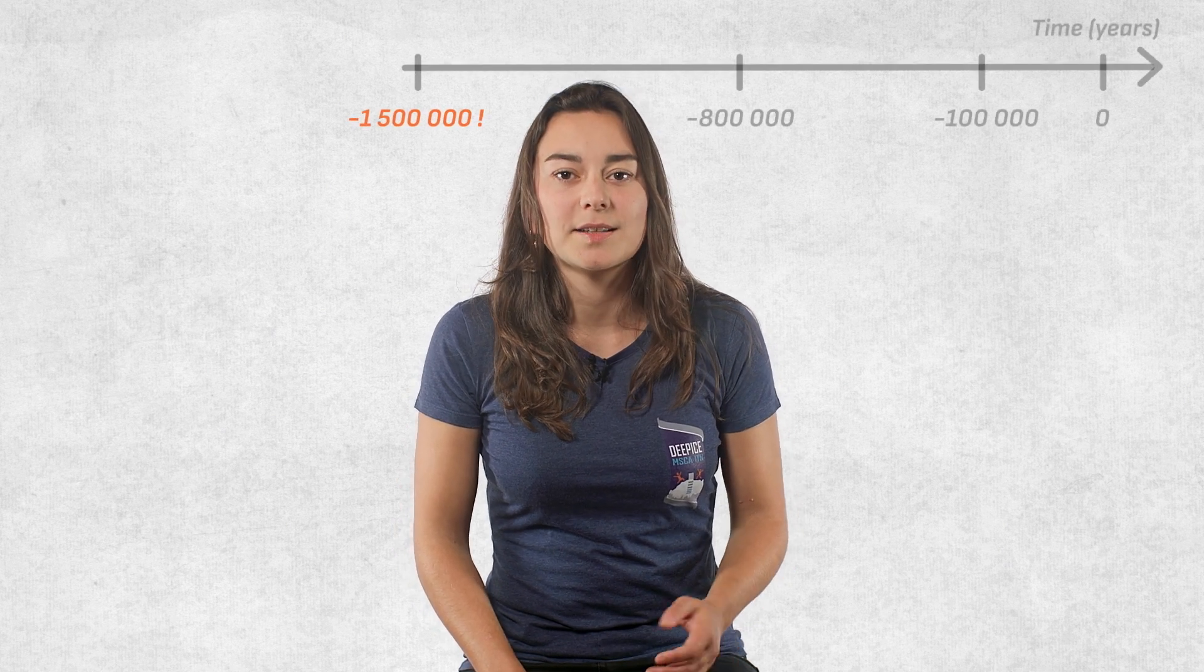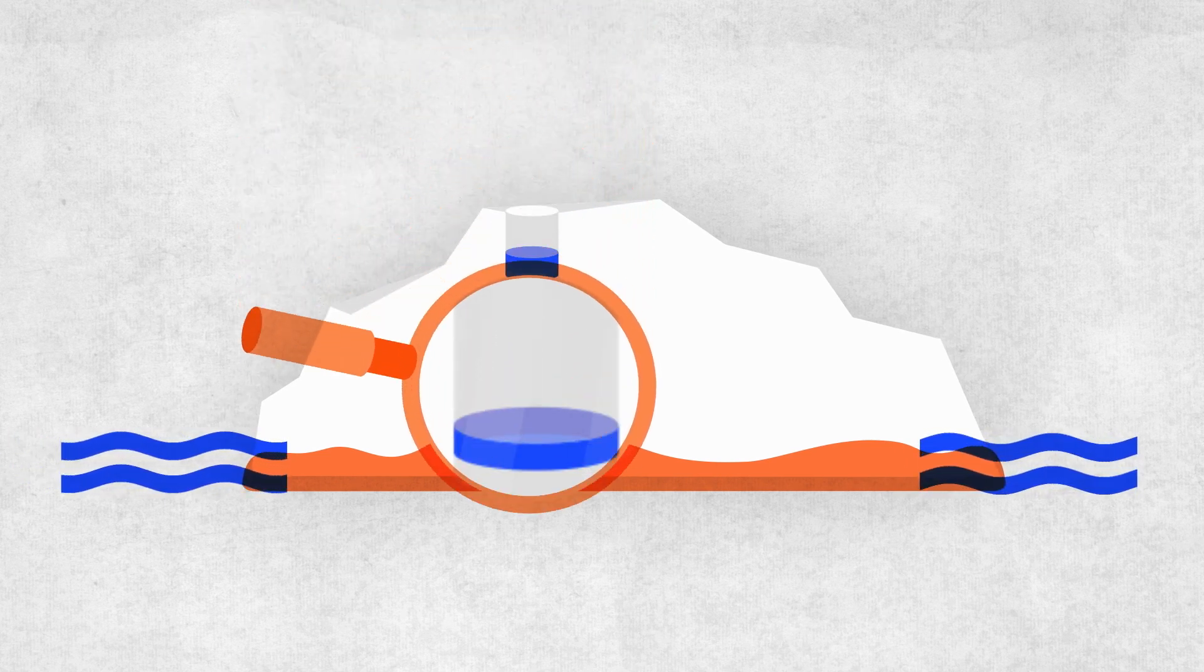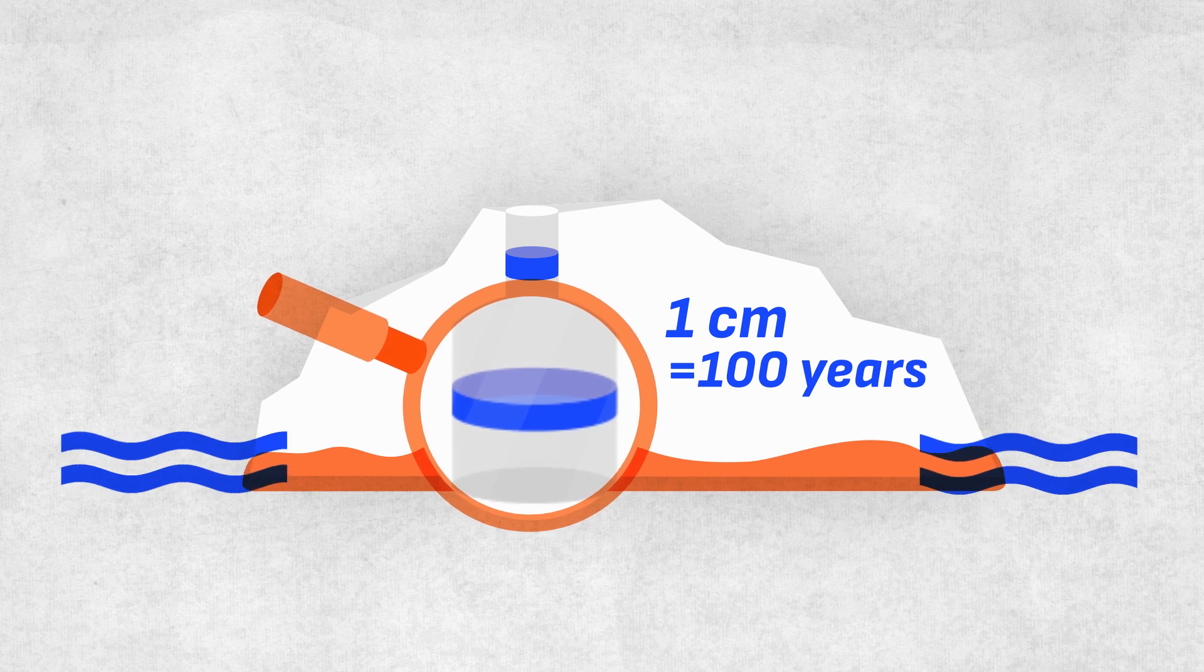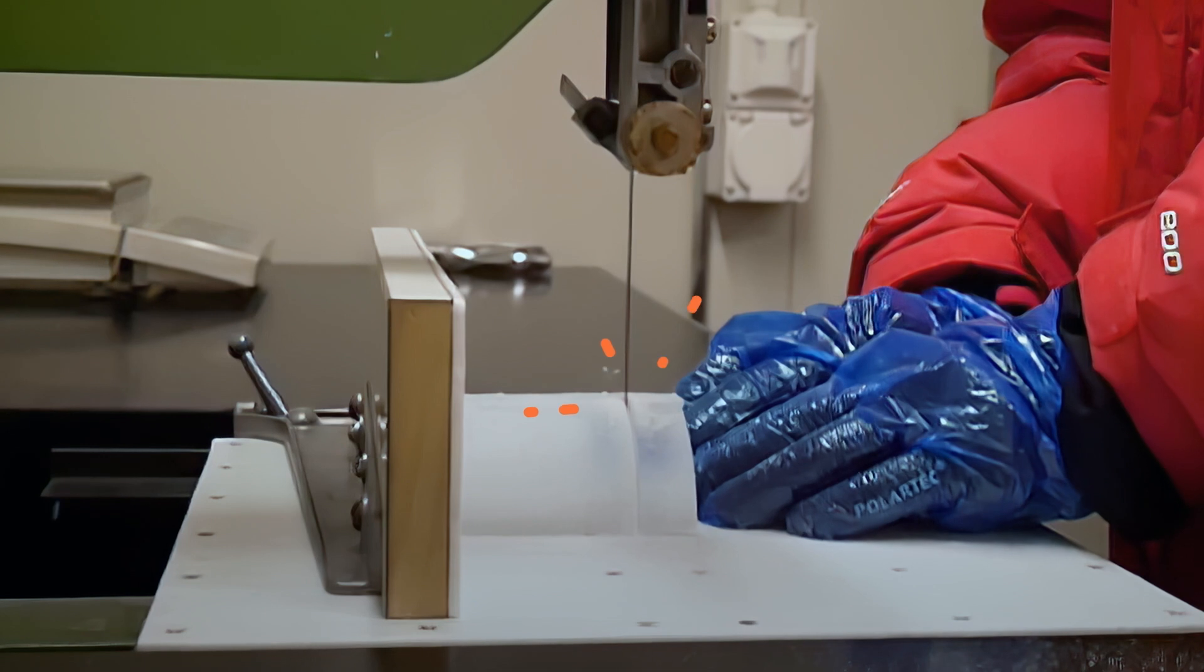The Beyond the Bigger ice core aims to reach 1.5 million years back in time. For the deepest part of this core, one centimeter of ice contains 100 years of atmospheric history. And this is very small, so we need very precise measurement techniques.